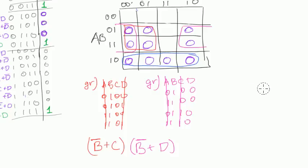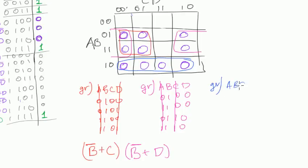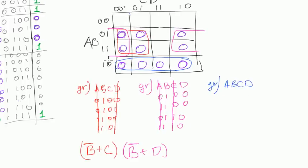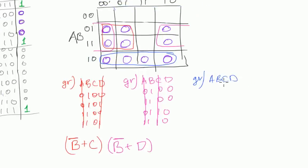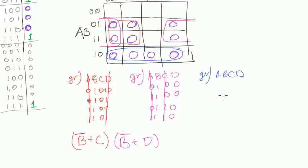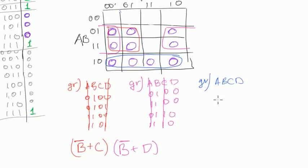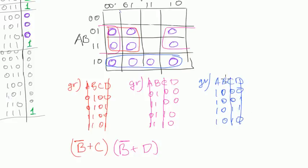Now let's do the last group — group blue. It's easy to see that A and B don't change at all, while all the other variables change in this group. Writing it out: C and D change, A and B do not change — as we predicted. So we write A plus B, and we negate A because we want only 0s in the end.